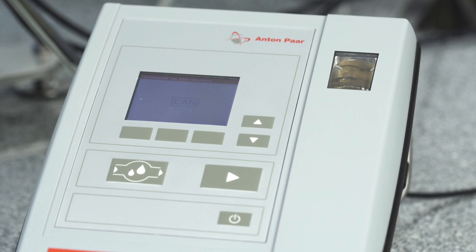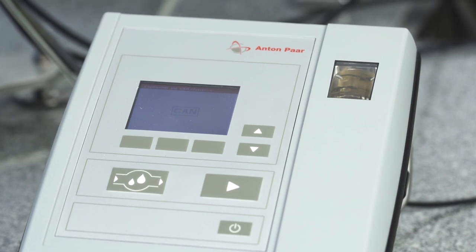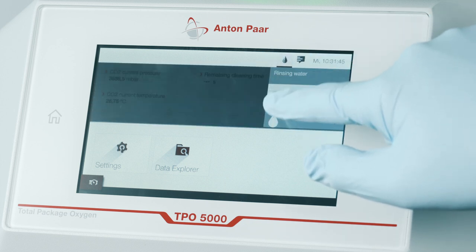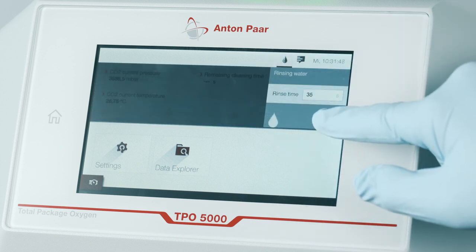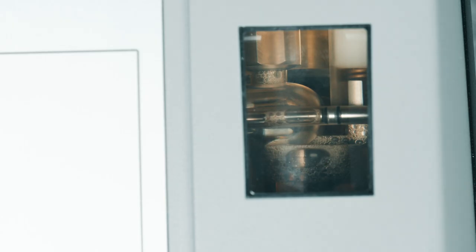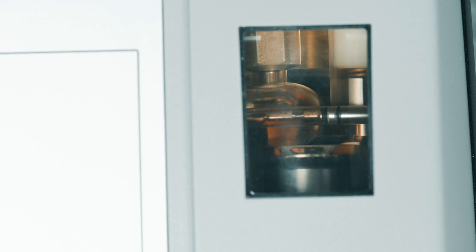After all work is done or if you aren't going to use the system for more than 20 minutes, clean CarboQC by simply tapping on the water drop symbol on the main screen and start the cleaning with the connected water supply on TPO5000. You do not need to clean TPO5000 separately, as it automatically cleans itself after each measurement.